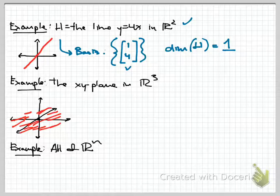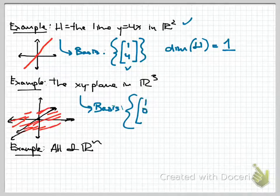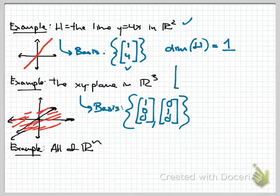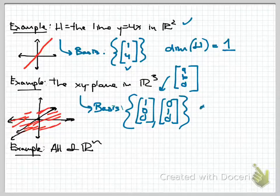Here's another example: consider R3, three-dimensional space, and look at the XY-plane—the floor in R3 along the x and y axes. A basis for this subspace is the set {(1,0,0), (0,1,0)}. Every vector in the XY-plane looks like (a, b, 0), which can be obtained by linearly combining those two vectors. So this set forms a basis for the XY-plane in R3, and the dimension is 2.